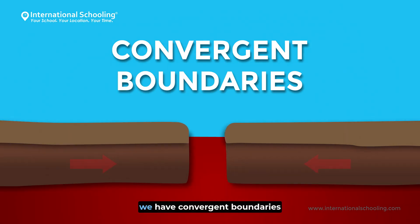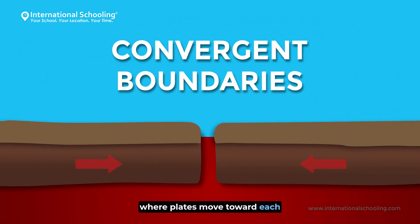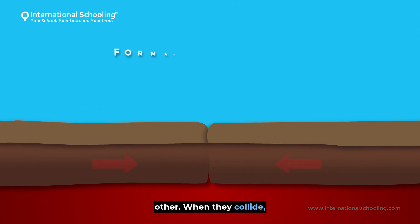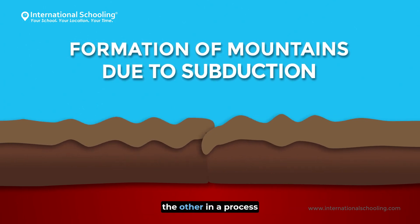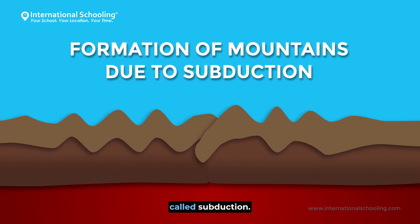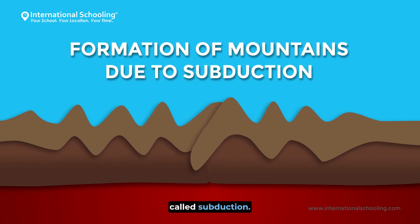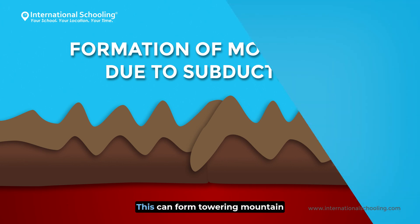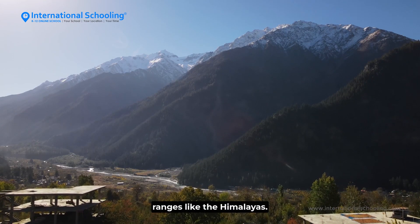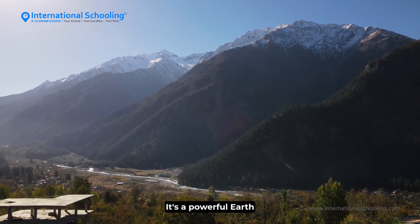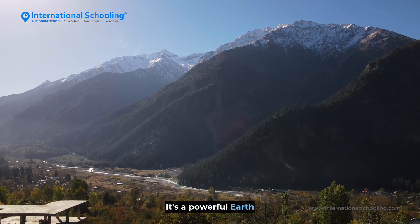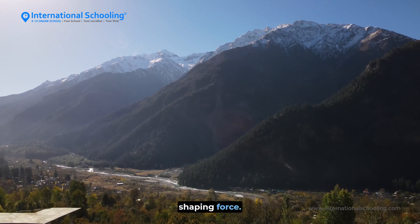Next, we have convergent boundaries, where plates move toward each other. When they collide, one plate often dives beneath the other in a process called subduction. This can form towering mountain ranges like the Himalayas. It's a powerful, earth-shaping force.